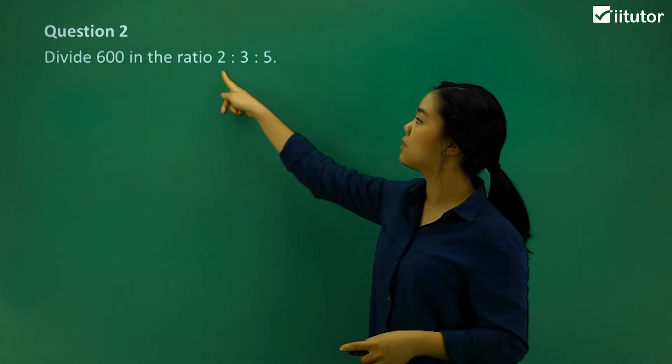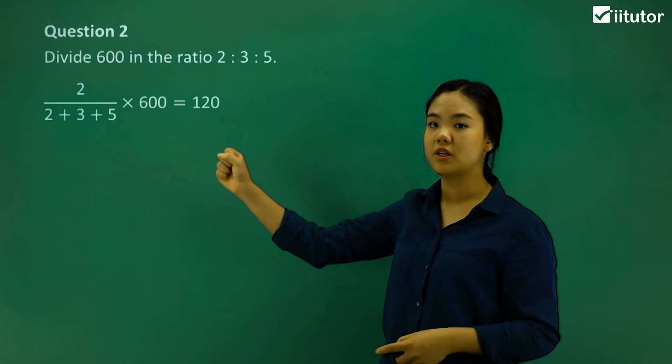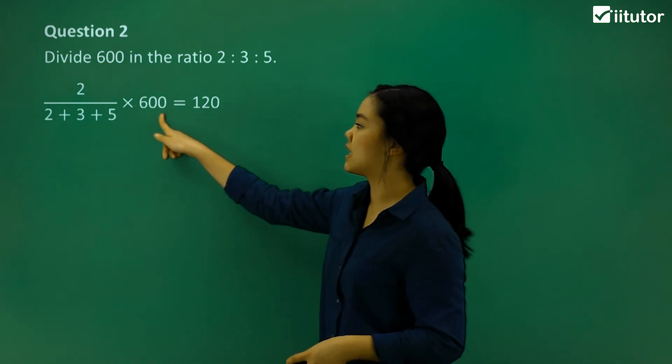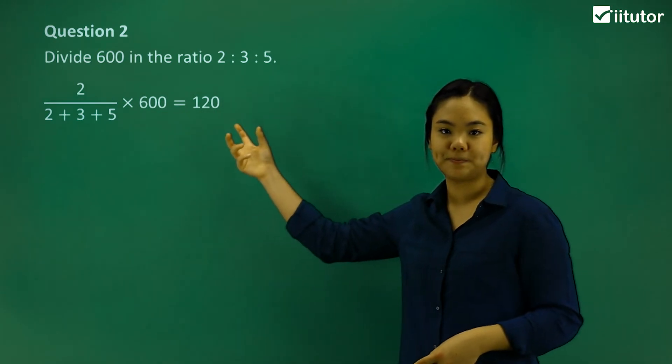Okay, so for 2, we just do 2 over 2 plus 3 plus 5 times 600. So of 600. So we get 120, right?